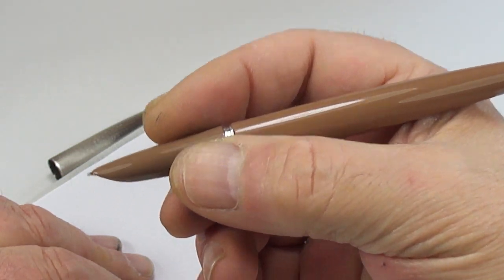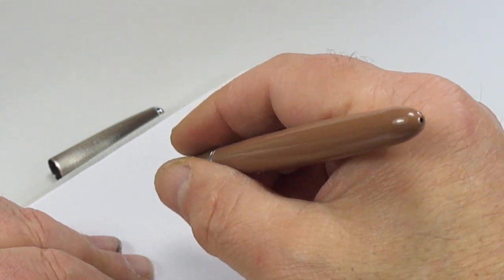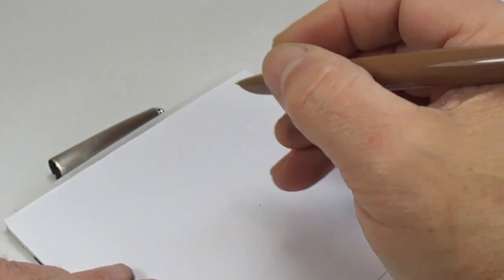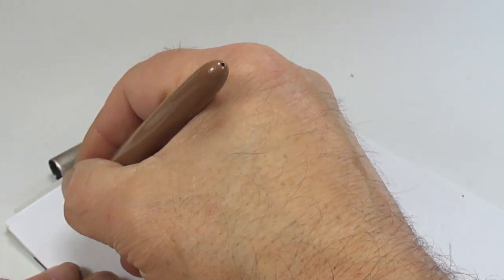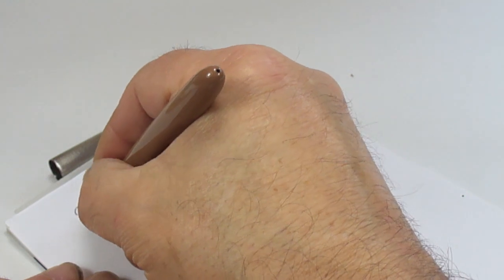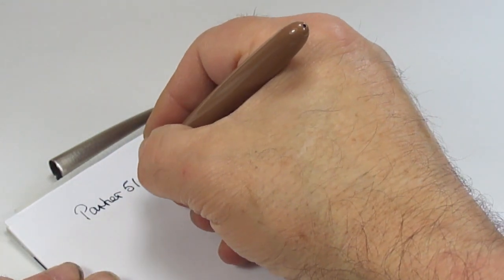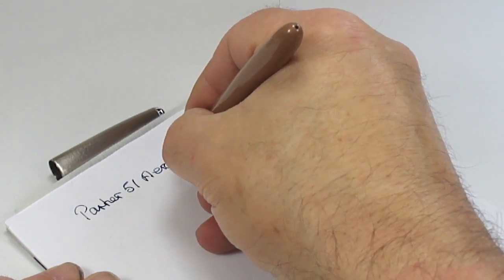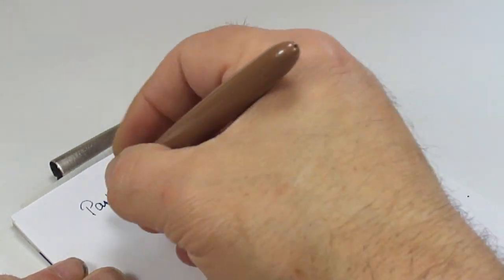So let's see how it writes. So what we've got, a Parker 51, and this one's what we term as the aerometric, made in the old US of A in 1953.